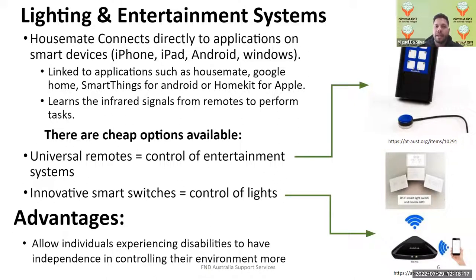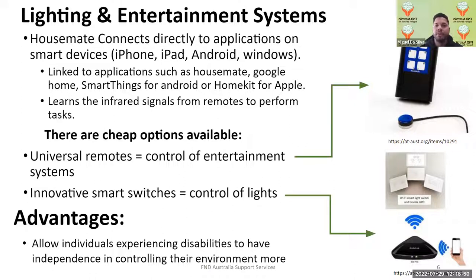The Housemate Light has 10 buttons with two functions each, allowing 20 different functions. You can set each button to perform multiple sequential tasks — for example, once the TV is on, you can code a button to type in channel 502 automatically, so every time you press that button it types 502 while the television is on.